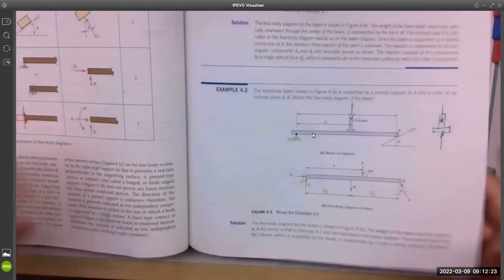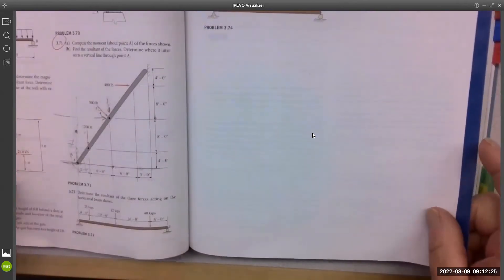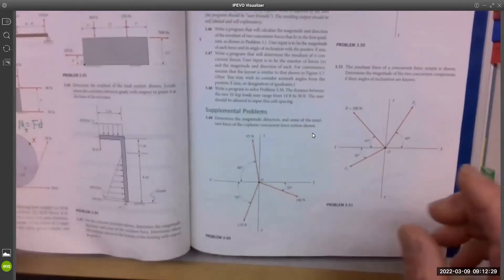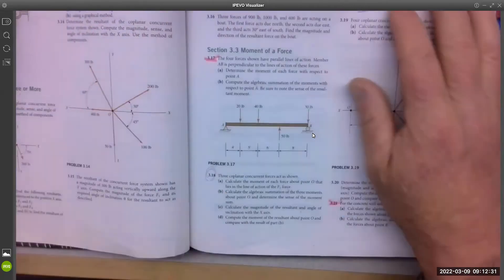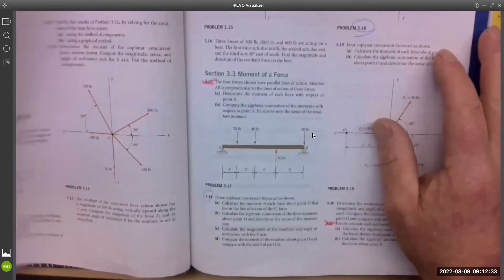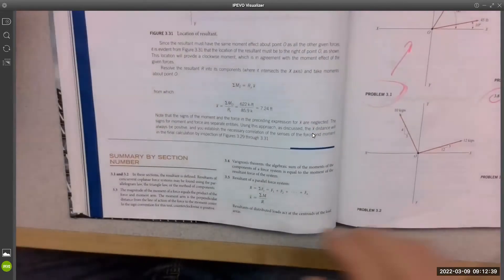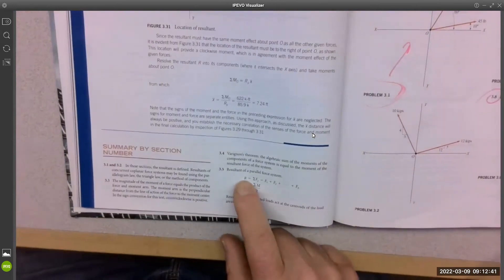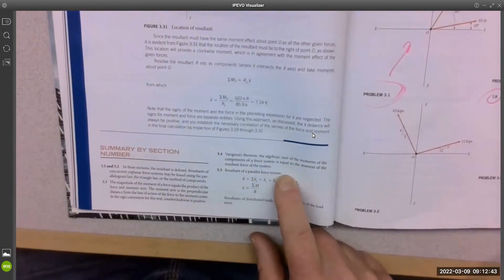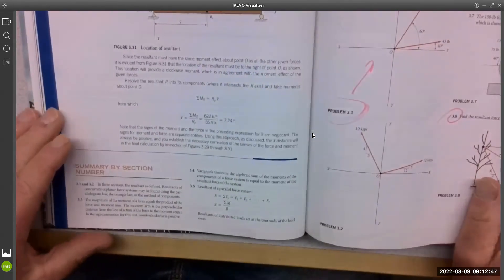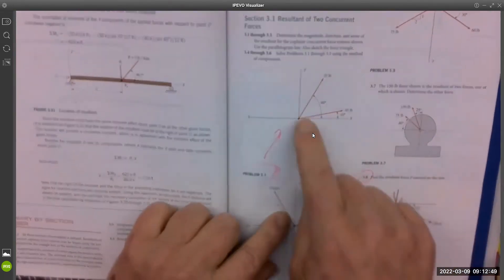Then chapter three. 400 problems in chapter three. It was resultant. So resultants of parallel force systems.